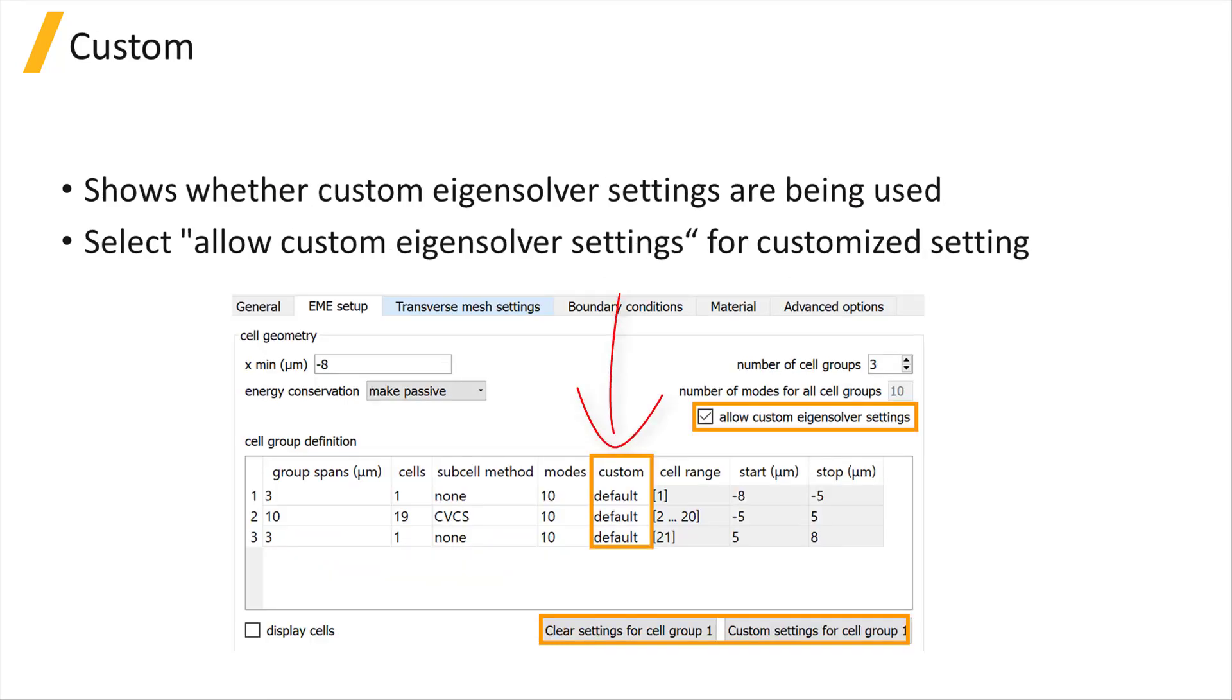Custom shows whether custom eigensolver settings are being used for finding modes. To set custom settings, select Allow Custom Eigensolver Settings.